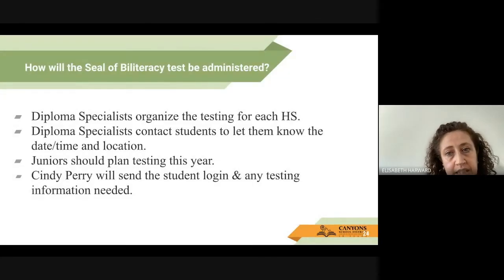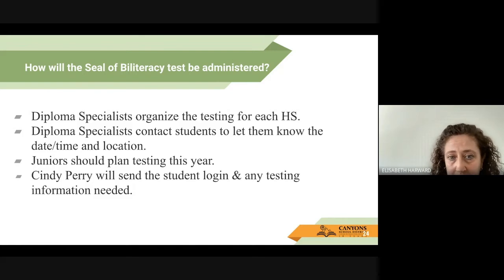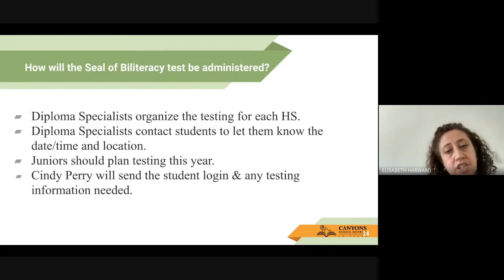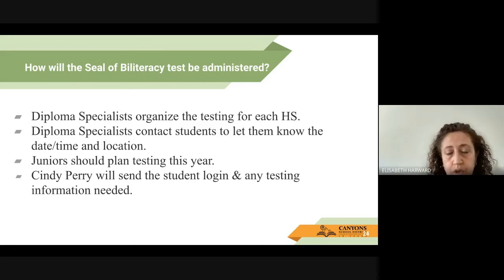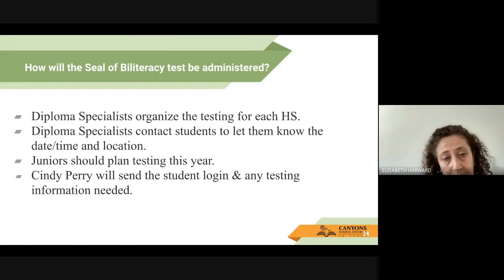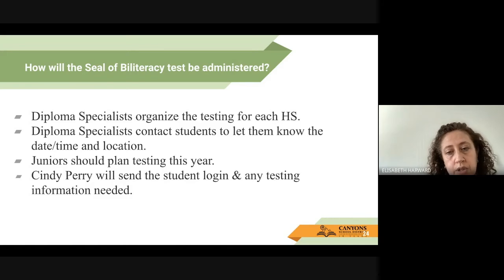How will the Seal of Biliteracy test be administered? The diploma specialist in each high school will organize the testing. They will contact students to let them know the date, time, and location of testing. Juniors should plan to test this year — they need to start testing to make sure they have all their requirements. If they complete all requirements by junior year, they won't have anything to do as seniors and will just wait for graduation to receive their certificate. Cindy Perry will send all diploma specialists the student login information and any testing information needed.